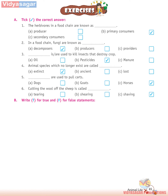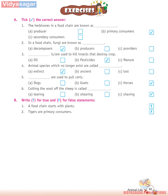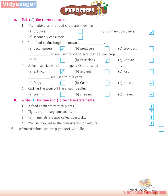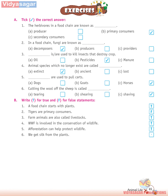Exercises B — Write T for True and F for False: 1. A food chain starts with plants — True. 2. Tigers are primary consumers — False. 3. Farm animals are also called livestock — True. 4. WWF is involved in the conservation of wildlife — True. 5. Afforestation can help protect wildlife — True. 6. We get silk from plants — False.